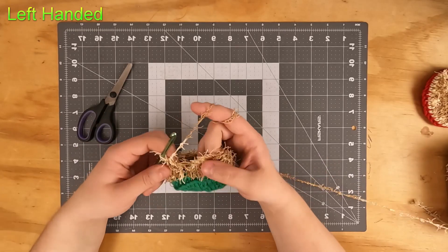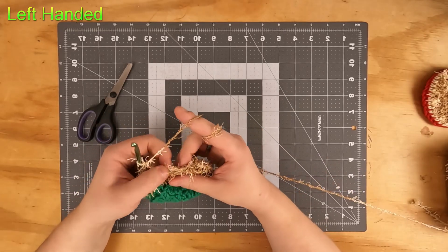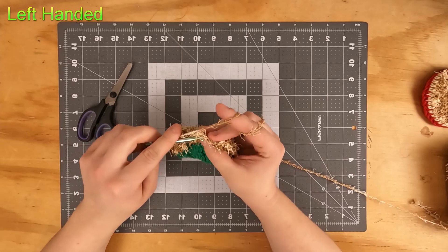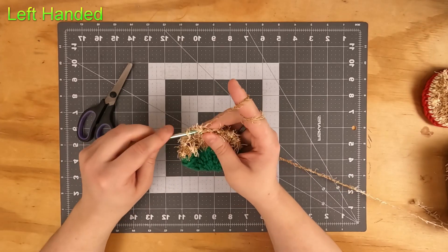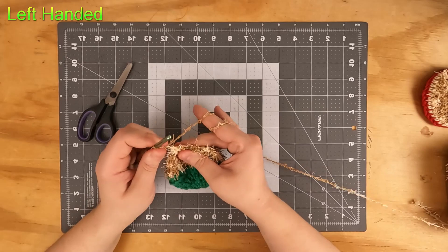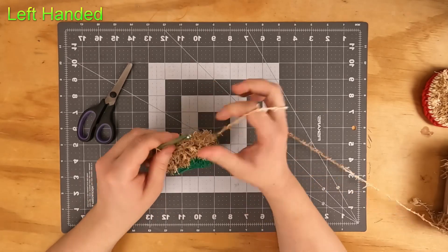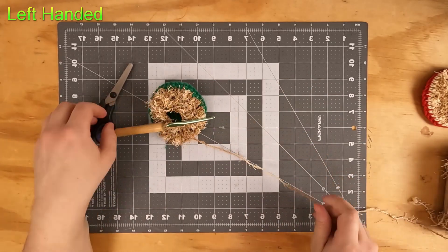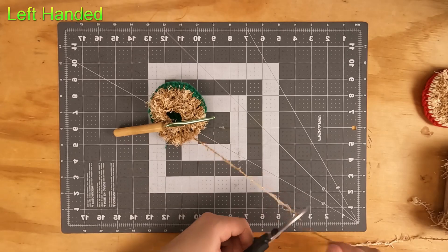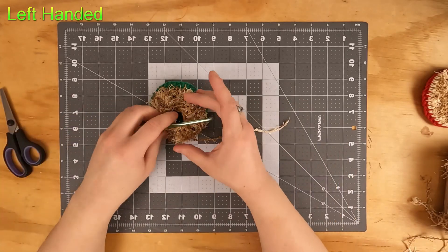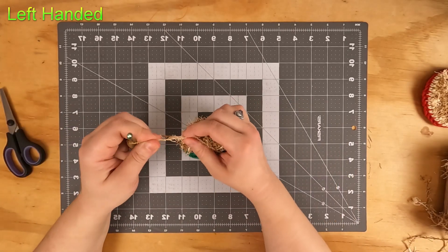All right, so that's our 12 decreases there. We're going to find the top of our first decrease and slip stitch there. This is the part where you got to be fairly careful about how you pull it through, because we are finishing off.